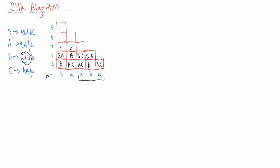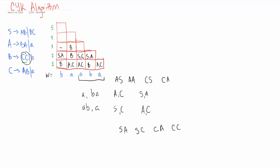Now for ABA, we can have A or BA, or AB or A. We end up with AC and BA is SA, then AB is SC and A is AC. Doing the Cartesian product we get AS, AA, CS, CA, and CC. CC is our only match again, which is present in state capital B, so we put capital B.